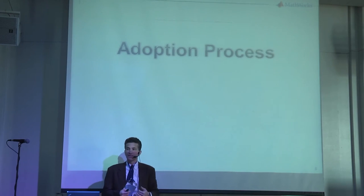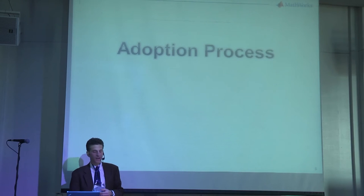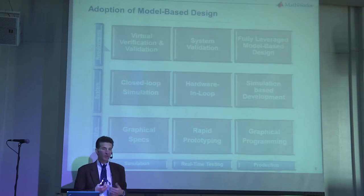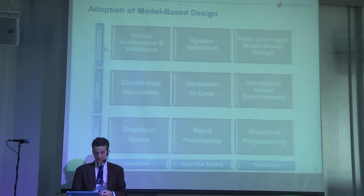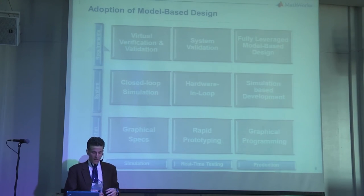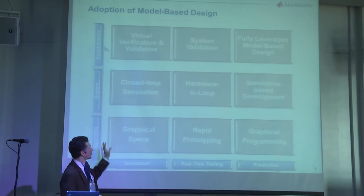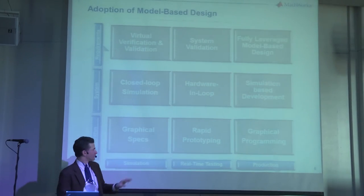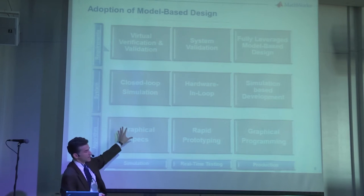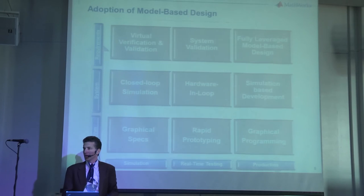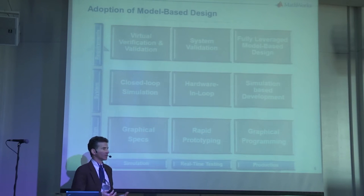The next thing we tend to interact with customers on is, once they've accepted the idea of moving from a document-based and hand-coding process to a model process, how to go about adopting it. At MathWorks, we put everything into a matrix — three-by-three matrices are pretty straightforward. We look across one axis in terms of getting to code quickly, and along another axis towards verification. Customers tend to adopt modeling first as a graphical way to describe things, and there's a tremendous value to moving from a spoken language to a pictorial language.